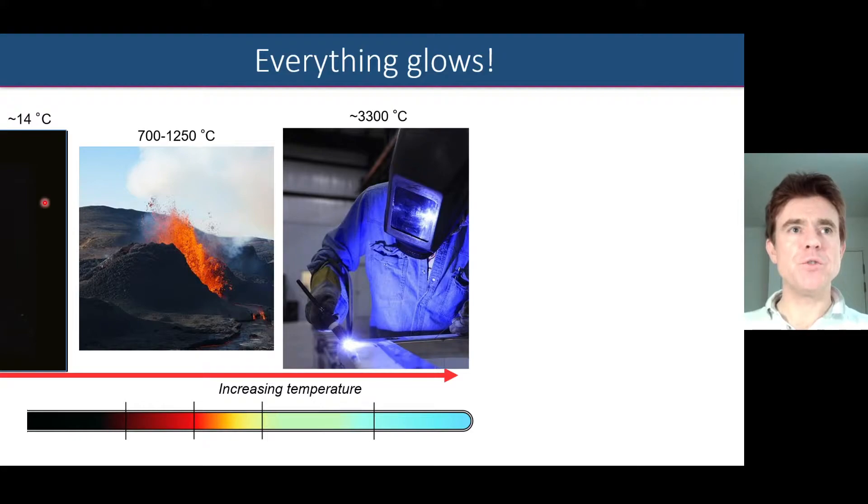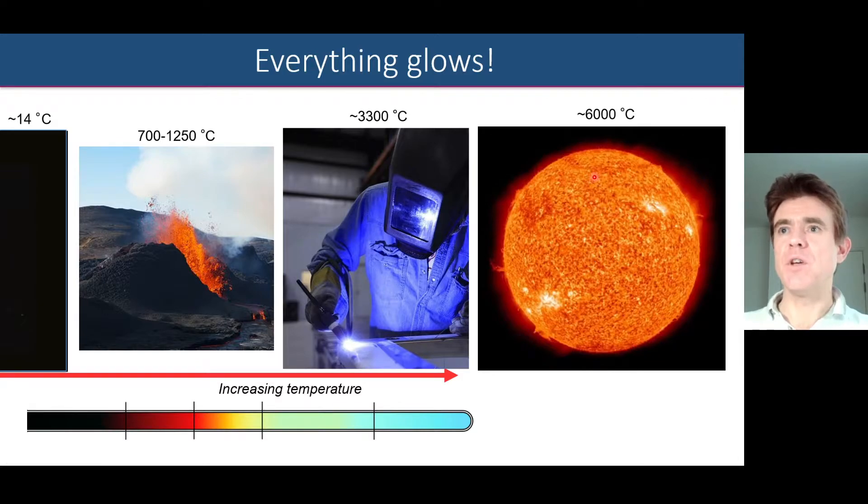So this is where we were: surface of the Earth, we can't see it, but it's in the infrared giving off radiation. Volcanoes, we could see. Welding, we could certainly see, but we've got to have protective equipment. And the sun also is giving off a broad range of electromagnetic radiation.